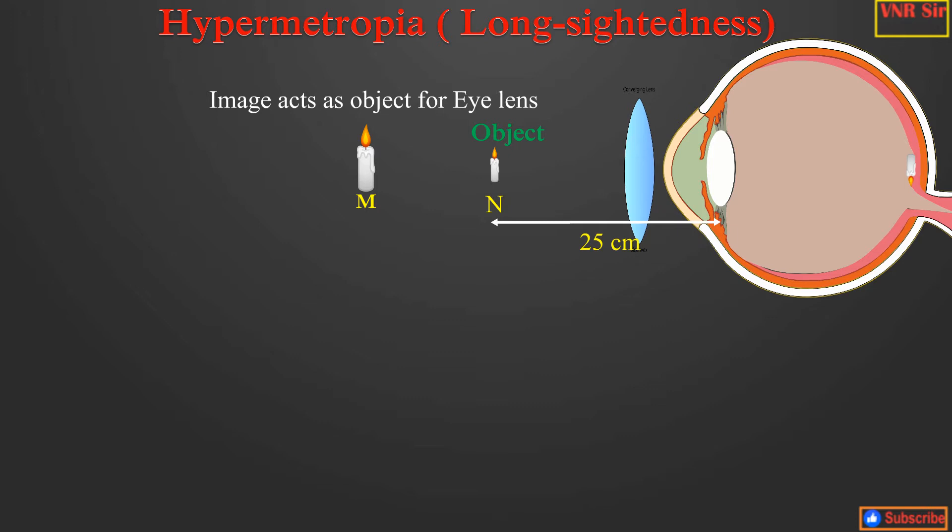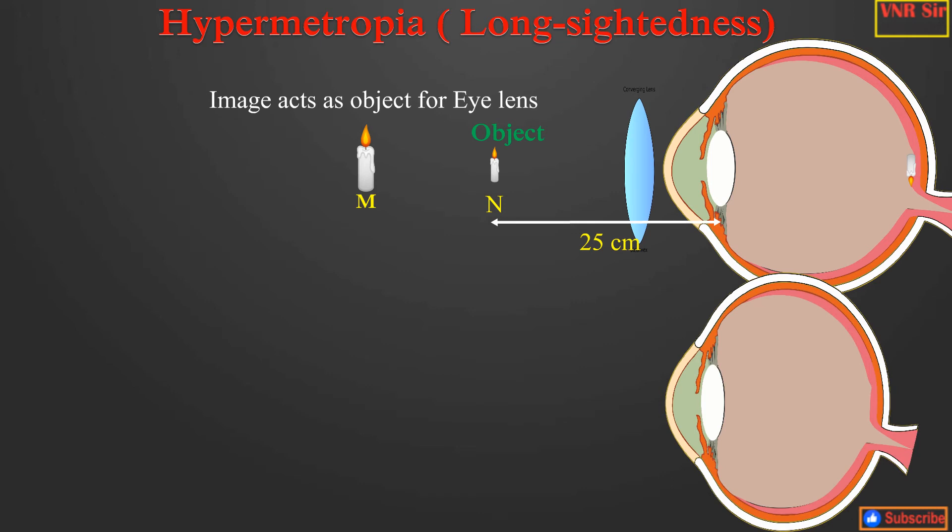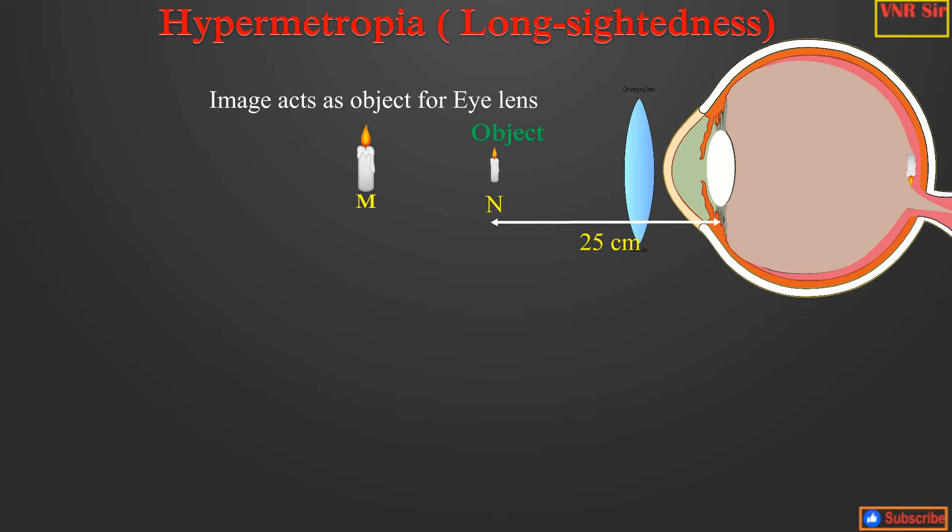This defect is due to the following reasons. It may be due to the shortening of eyeball size. And the second one is the ciliary muscle is unable to change the shape of the lens enough to properly focus the image onto the retina.